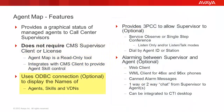When configured to use the optional ODBC connector to the CMS or IQ datastore, the AgentMap server can download the names of the agents, skills, and VDNs for display on the AgentMap client. Without the optional connector, these names must be manually administered in AgentMap.